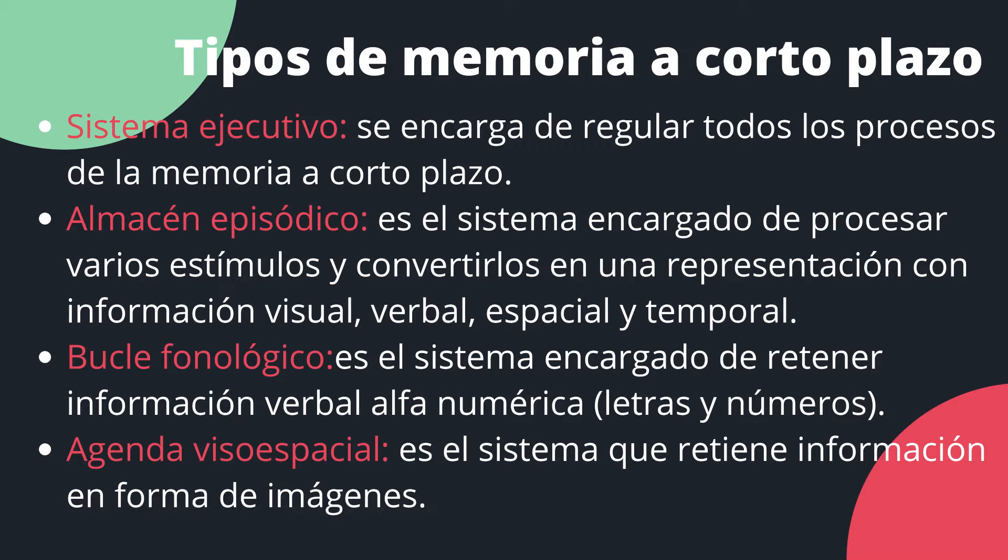Los tipos de memoria a corto plazo serían: un sistema ejecutivo, que se encarga de regular todos los procesos de la memoria a corto plazo; un almacenamiento episódico, que es el sistema encargado de procesar varios estímulos y convertirlos en una representación con información visual, verbal, espacial y temporal; el bucle fonológico, que es el sistema encargado de retener información verbal alfanumérica, es decir, letras y números; y la agenda visoespacial, que es el sistema que retiene información en forma de imágenes.